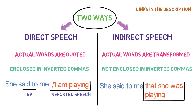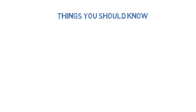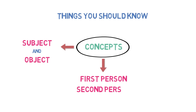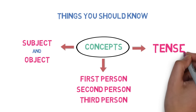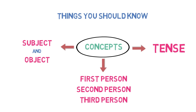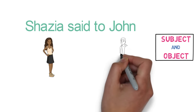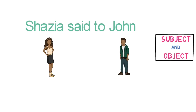We will now look at how we can convert a direct speech into indirect speech. But before we begin, there are certain things you should know. There are three important concepts you must understand properly. First, what is subject and object in the sentence. Second, what is first person, second person, and third person. And third, what is tense. We will understand subject and object with an example. In the sentence 'Sazia said to John,' Sazia is the person doing the action and John is the person receiving the action. The person doing the action is the subject and the person at the receiving end is the object.